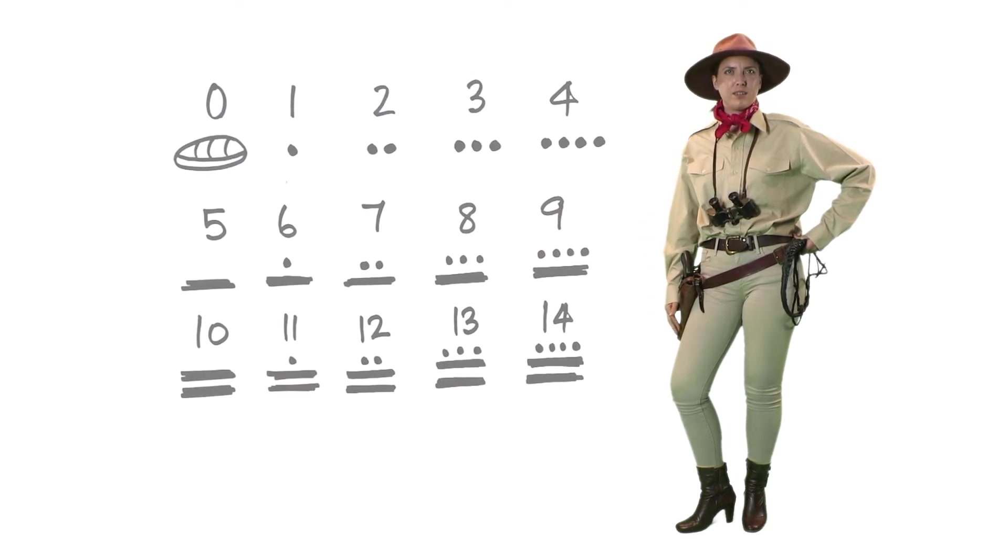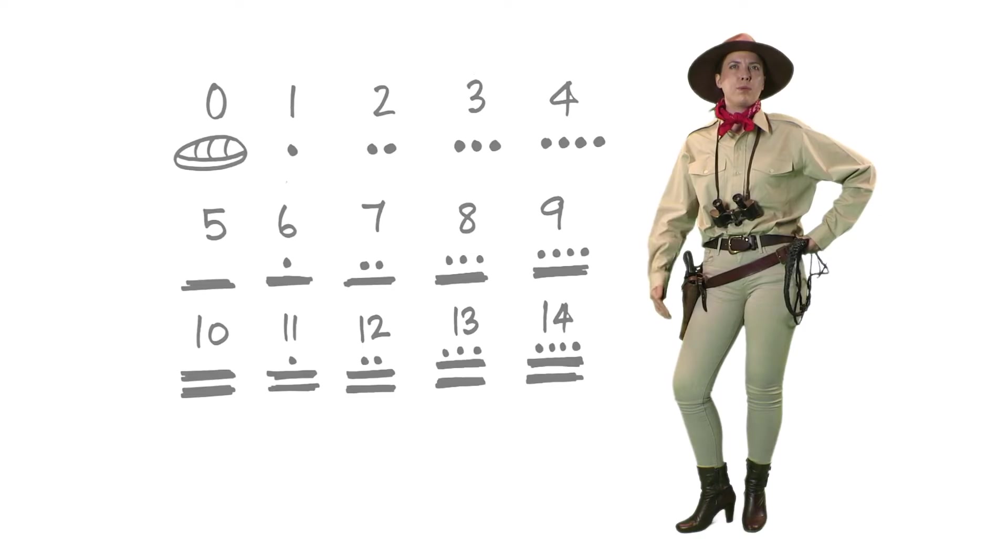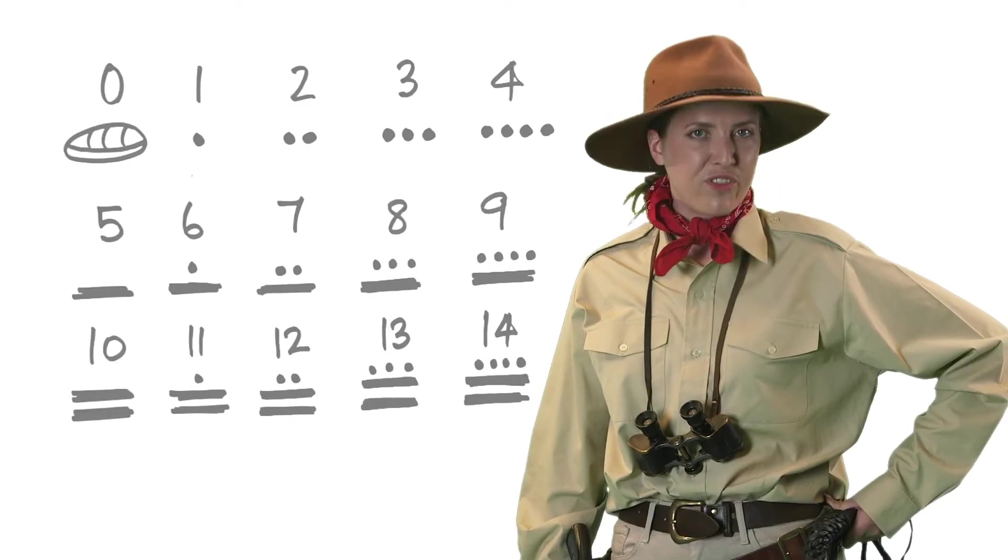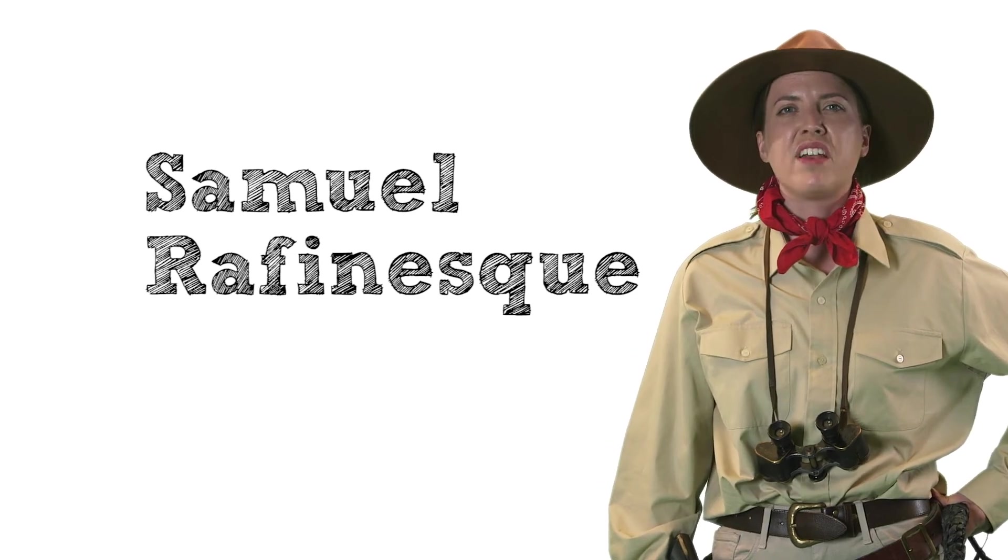Simple, really. They had a different symbol for zero. That was used for 20, and on it goes. But the higher the number goes, the more complicated it becomes. This form of arithmetic was figured out by a man called Samuel Rafinesque.